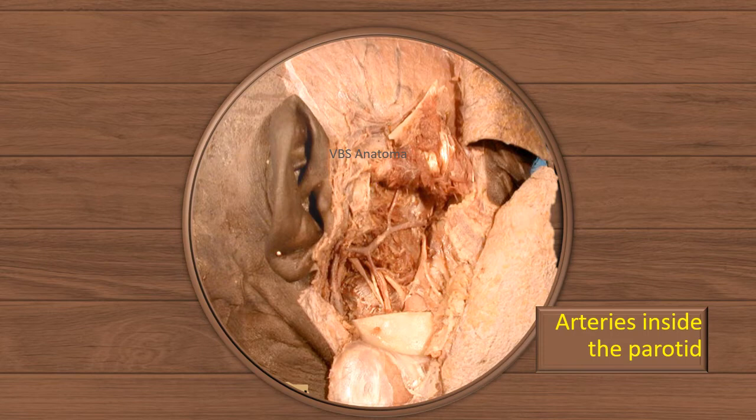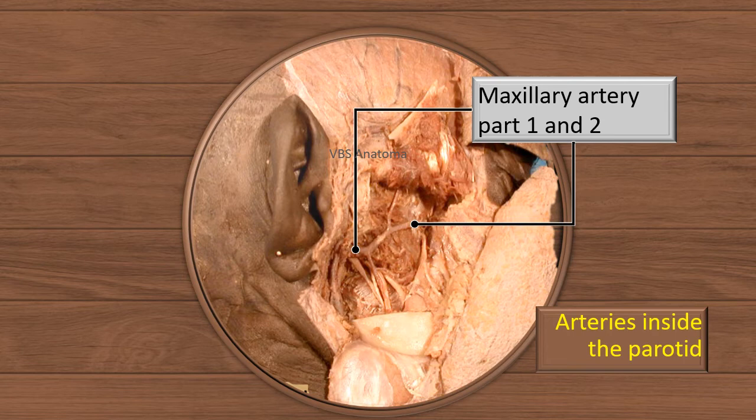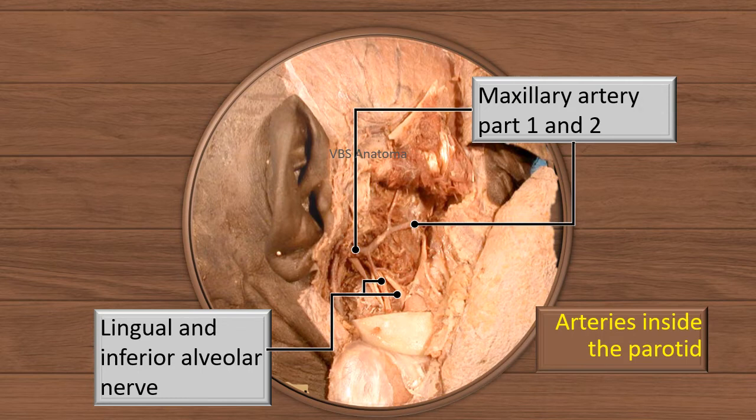This is another view showing the arteries inside the parotid gland — remember, arteries. The external carotid artery enters the gland close to the apex on its lower surface. That artery, in the substance of the gland, divides into the maxillary artery and the superficial temporal artery. Only the maxillary artery is visible in this dissection since the parotid has been removed. To complete the orientation, important neighboring structures are also shown, including the lingual and inferior alveolar nerves — making this more a dissection of the infratemporal fossa to show the immediate relations inside or outside the parotid gland.